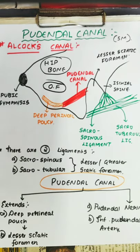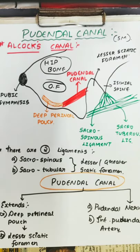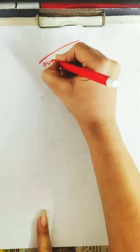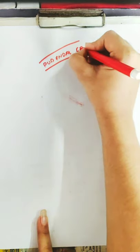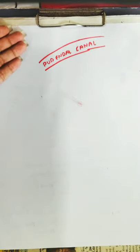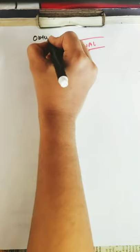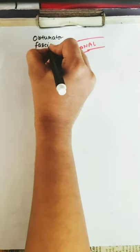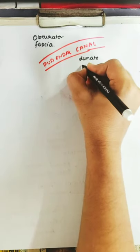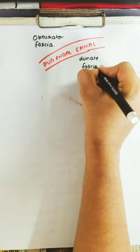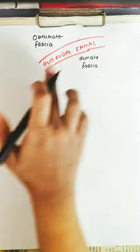This fascia is also known as a fascial tunnel which enters into the lateral wall of the ischioanal fossa just above the sacrotuberous ligament. It extends from the lesser sciatic foramen till the deep perineal pouch. The pudendal canal has a space between the obturator fascia and the lunate fascia. You can think of it like this: if this is the pudendal canal, then there is obturator fascia passing above it and the lunate fascia passing below it.